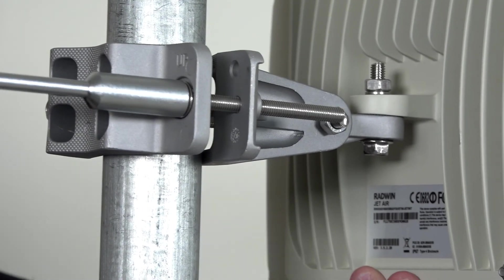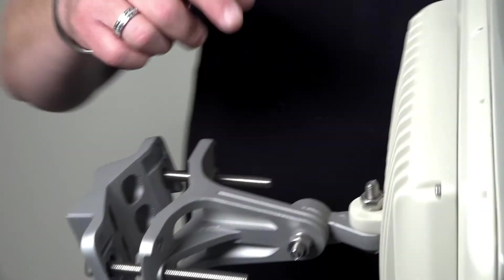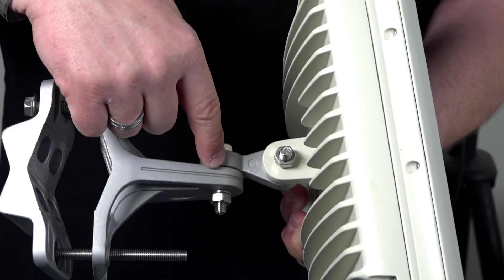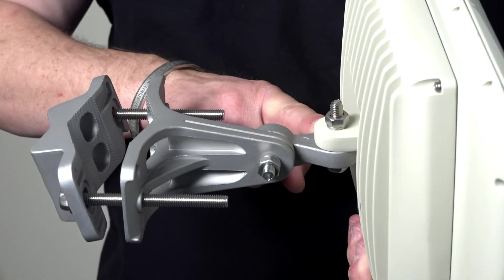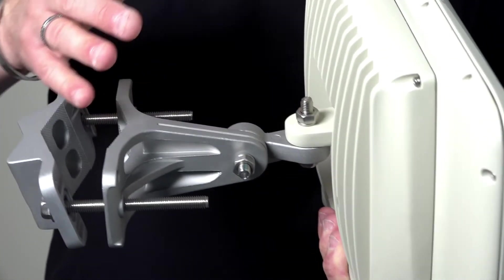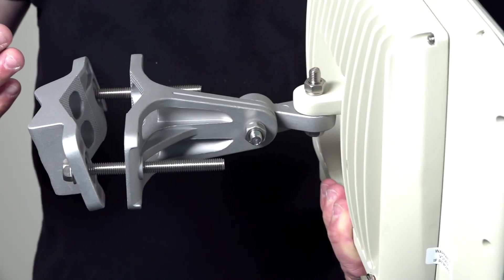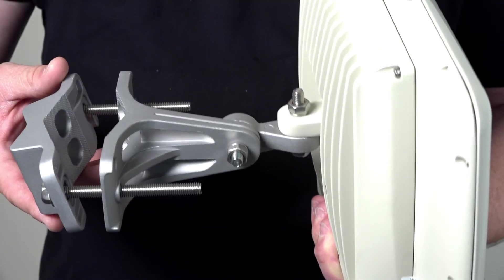The joints of the bracket are also notched. These notches help you so that you don't lose your tilt or azimuth once the installation is complete.